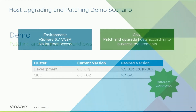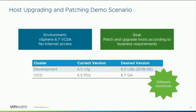Now I want to get to another more interactive demo. I'm going to show you an environment that has two clusters. This is a vSphere 6.7 GA environment, but I'm managing some older clusters. One cluster has 6.5 U1G and we want to get that up to 6.5 U2B. The other one is on 6.5 and we're going to put it on 6.7 GA. So we have an update and we have an upgrade.